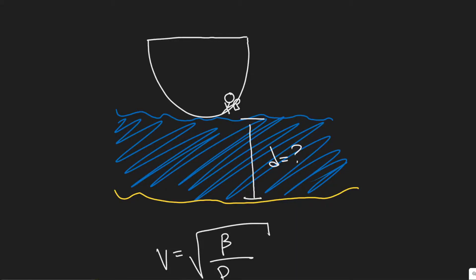In this problem we're told a sailor strikes the side of his ship just below the surface of the sea. He hears the echo of the wave reflected from the ocean floor directly below 2.8 seconds later. How deep is the ocean at this point?